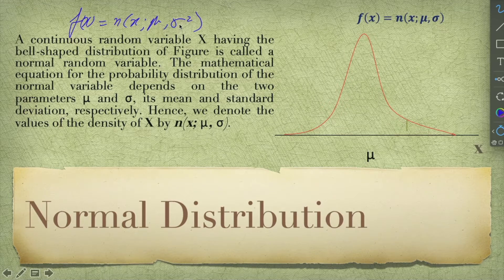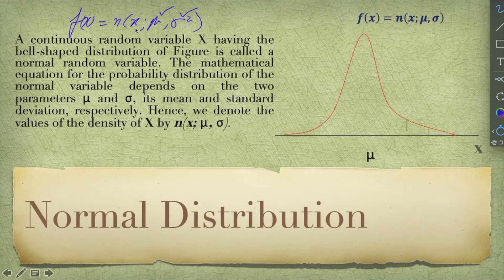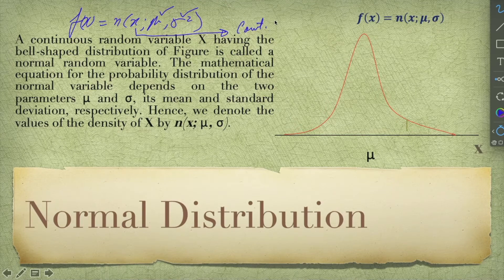The function f(x) defines the notation for normal distribution, where two parameters are constant for a particular normal distribution: one is the mean and the other is the variance. The variable x is called a continuous random variable.